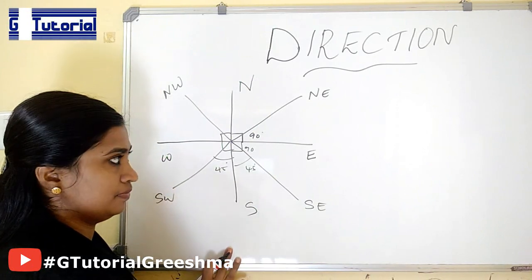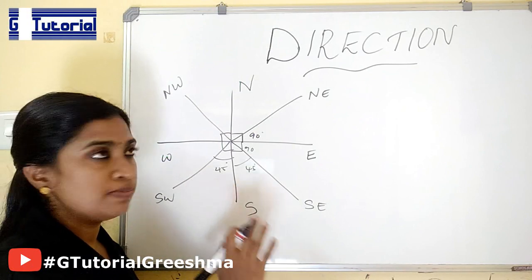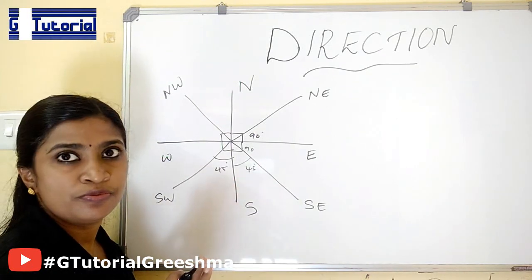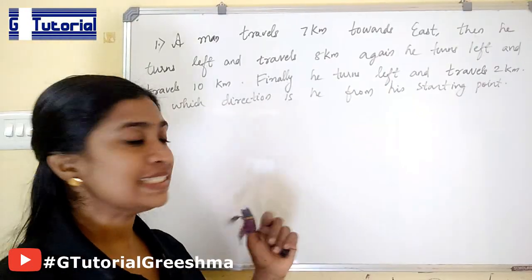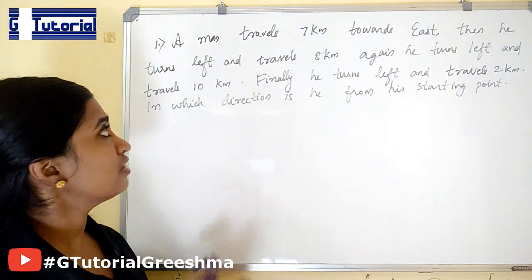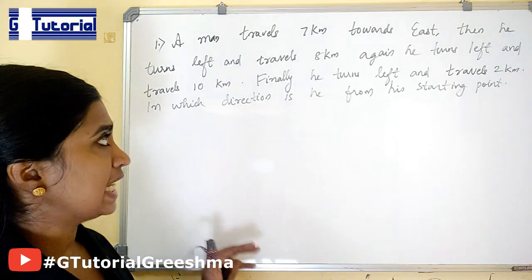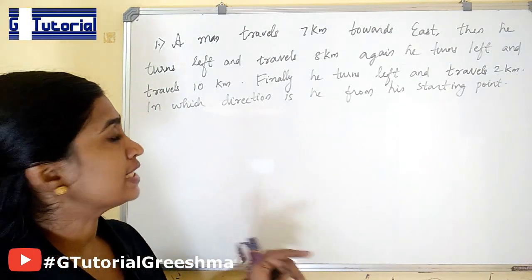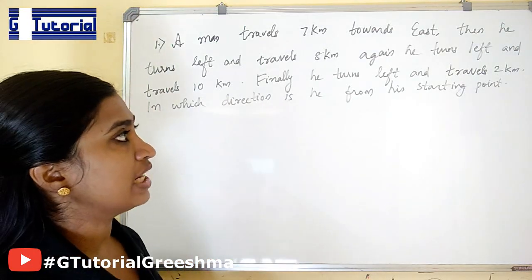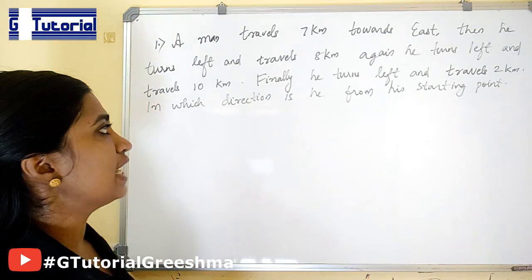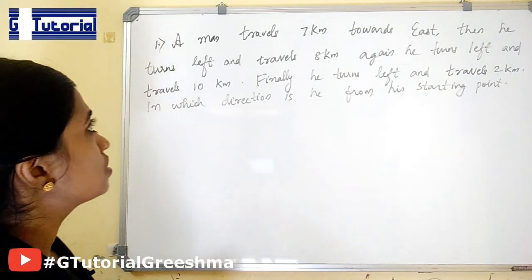Now we can do problems based on this. Two types of problems will be asked from this type. Here is the first type: A man travels 7 km towards east. Then he turns left and travels 8 km. Again he turns left and travels 10 km. Finally he turns left and travels 2 km. In which direction is he from his starting point?